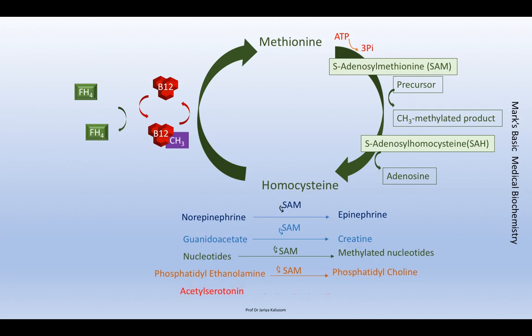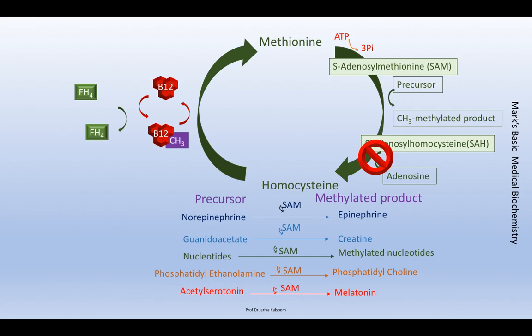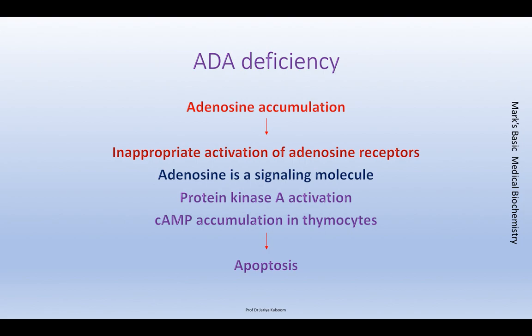When S-adenosyl homocysteine hydrolase is inhibited due to dATP accumulation, all these methylation reactions are blocked and S-adenosyl homocysteine accumulates. This accumulation triggers apoptosis and cell death. The third mechanism of toxicity is that excess adenosine, acting as a signaling molecule, causes inappropriate stimulation of adenosine receptors, activating a signaling cascade leading to cyclic AMP accumulation, which also triggers apoptosis.